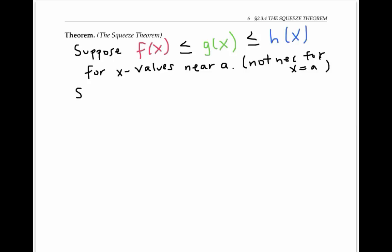Let's suppose also, that like in the previous example, f of x and h of x have the exact same limit as x approaches a. So we're going to suppose that the limit as x goes to a of f of x is equal to the limit as x goes to a of h of x. And we'll call this limit L.